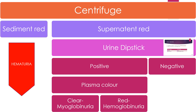Hemoglobinuria is due to hemolysis, and you can find associated symptoms and signs of hemolysis. Suppose the urine dipstick is negative — it means the child has neither RBCs nor hemoglobin or myoglobin, so you need to look back at your foods, medications, and metabolites.